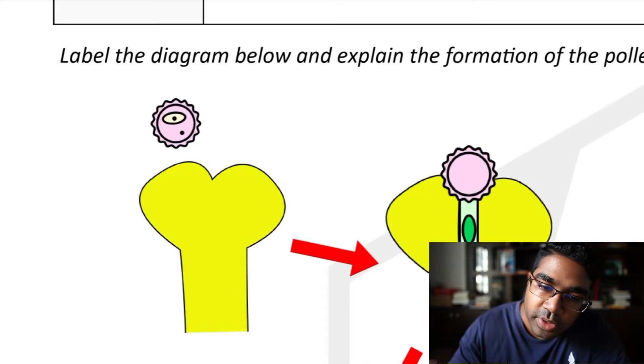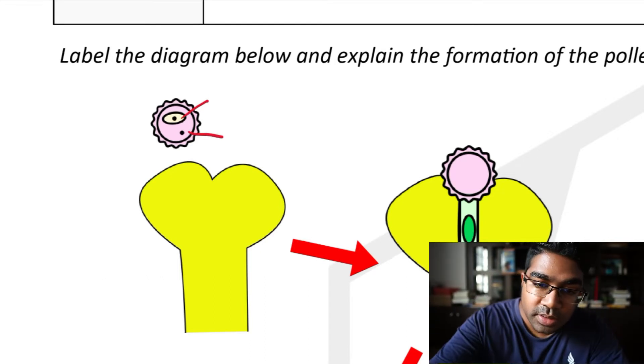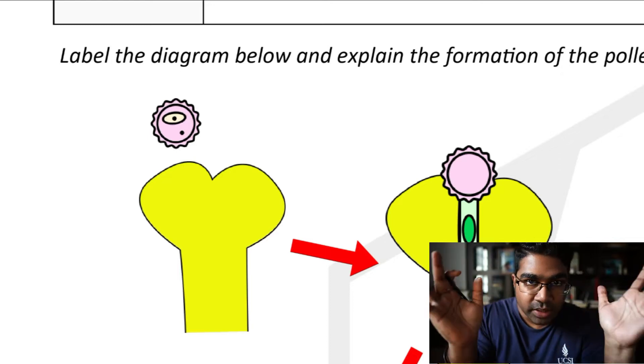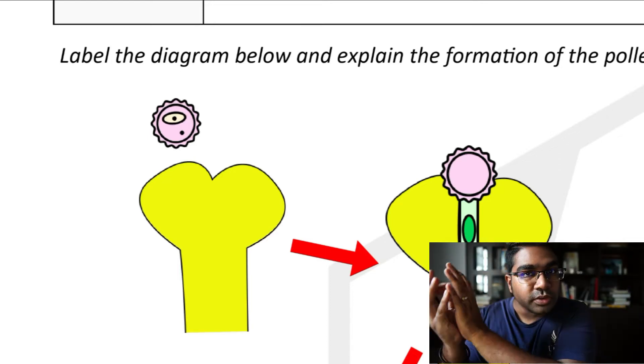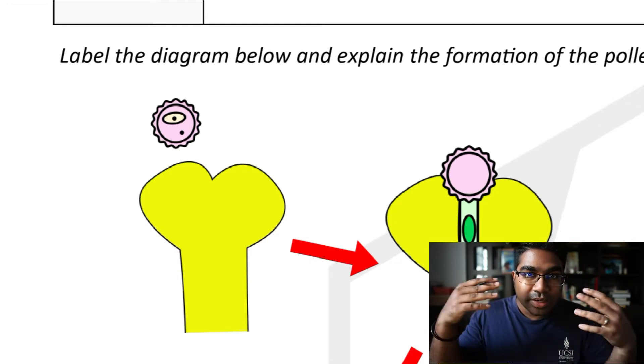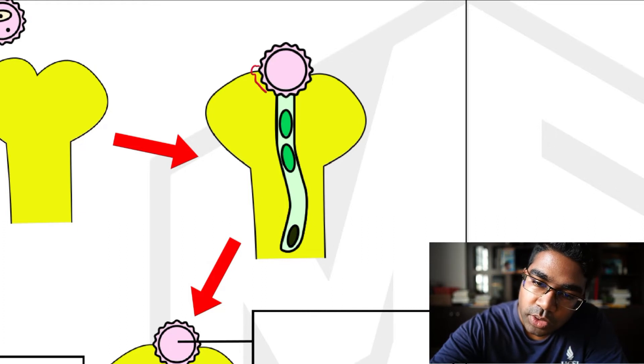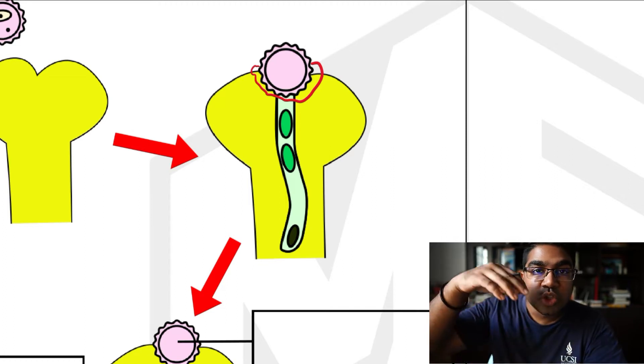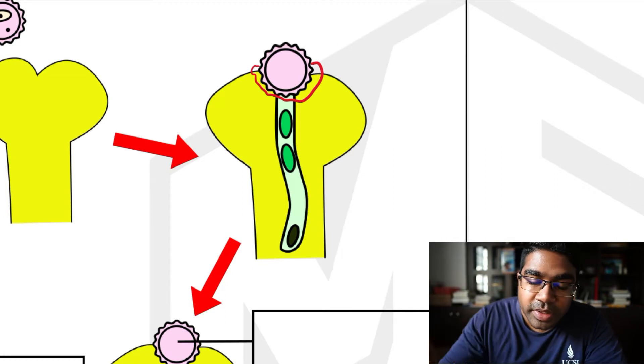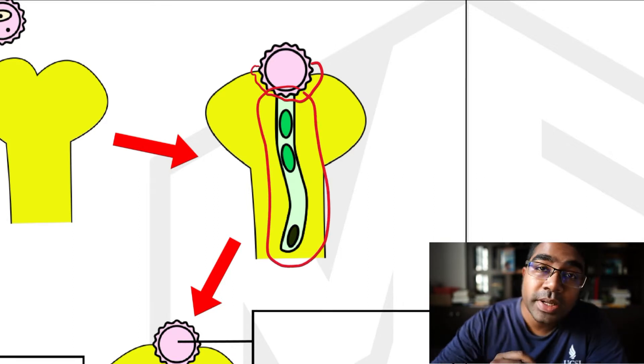The pollen grain has two nuclei. One is the generative nucleus and the tube nucleus. When pollination occurs, the anther will burst and the pollen grains will then be transferred to the stigma, sometimes through the use of pollinating agents. Once the pollen is on the stigma, the sugars on the stigma are going to cause the pollen grain to germinate. And when it germinates, it forms this thing here, which is known as the pollen tube.